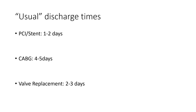Usual discharge times: PCI or stent patients are usually out in one to two days. CABG is four to five days — that has a lot to do with the chest tubes and pacer taking a couple of days to remove, to make sure the heart is stable and the graft takes. Valve replacements typically do pretty well because, if there's no underlying cardiovascular disease, we're essentially just doing a mechanical repair — removing that defective valve which was causing a mechanical constraint to pumping performance and replacing it. If they don't have underlying cardiac disease, they do pretty well after surgery.